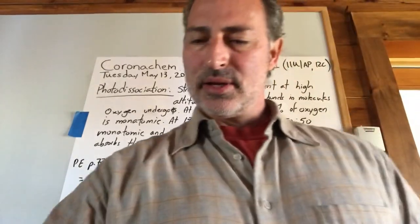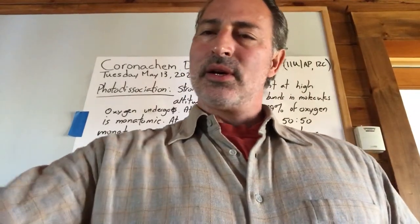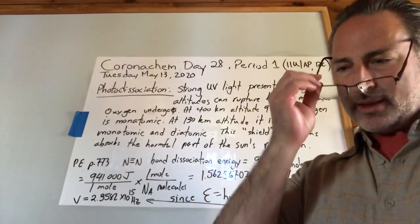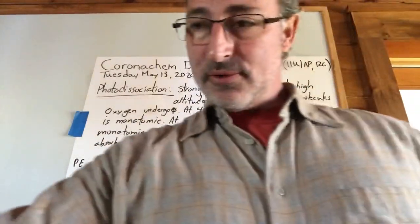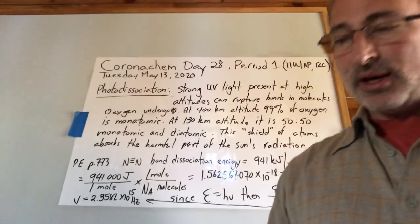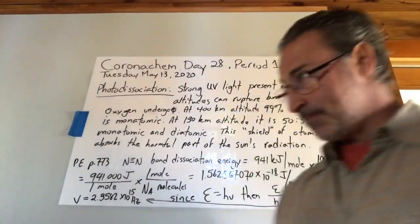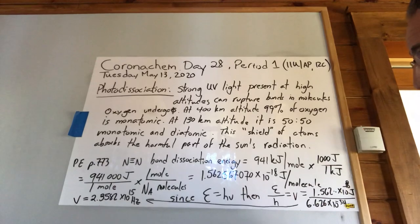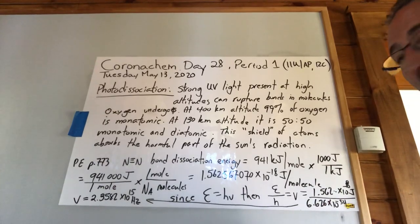Good morning class. Today is day 28 of Corona Chem. Today we're going to talk about photodissociation and the power of the sun. This is period one, of course, for grade 11 and 12C.